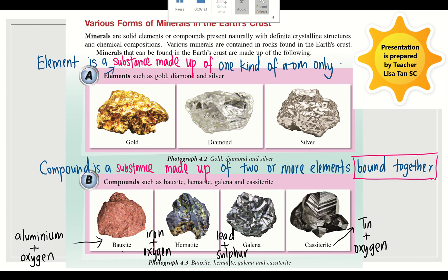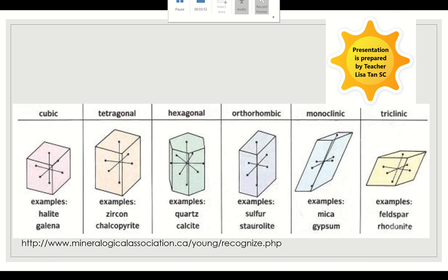Next. What is the properties of minerals? Properties of minerals: All minerals are solid. Number two, they have definite, they have fixed crystallized structure, crystal structure. So here are some examples of crystal structure: cubic, tetragonal, hexagonal, orthorhombic, monoclinic, triclinic. There are many examples.